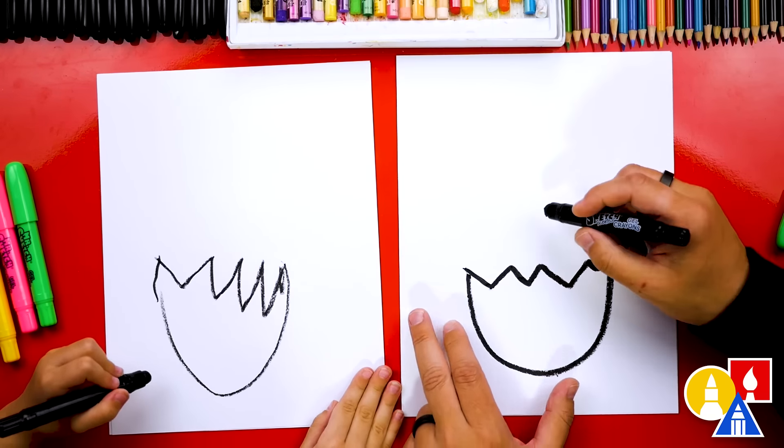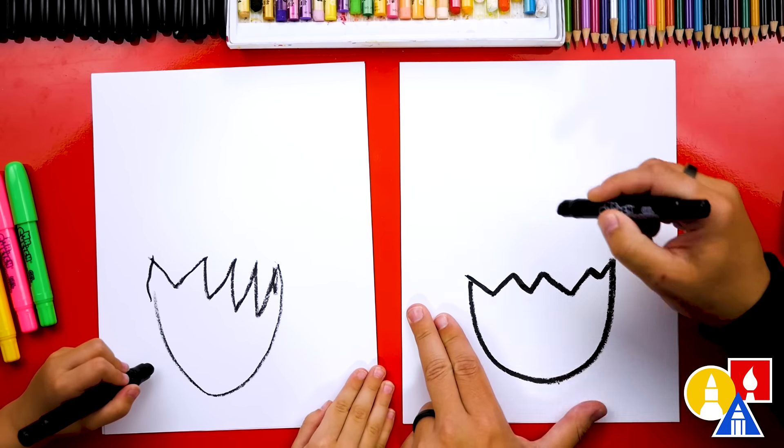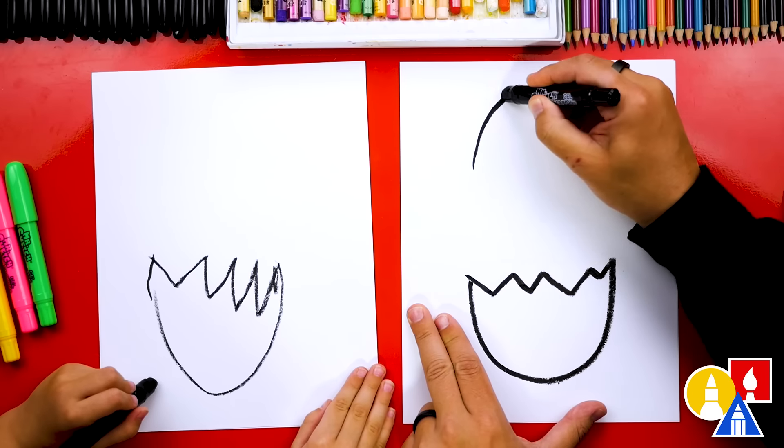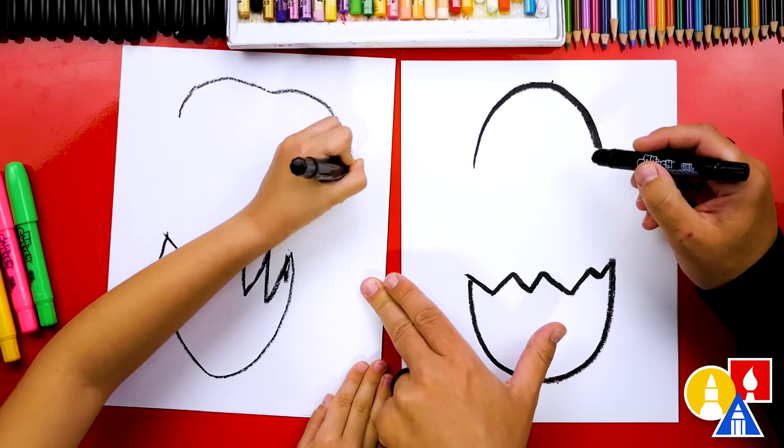Okay. Now let's draw the top of our Easter egg. We're going to draw it up here. We're going to draw an upside down letter U. We're going to go like this. Kind of looks like a rainbow line. Yoo-hoo. Wow.